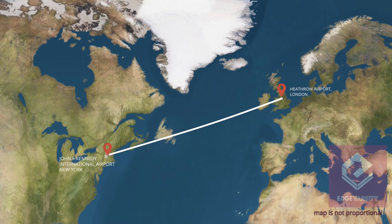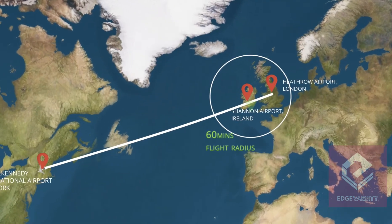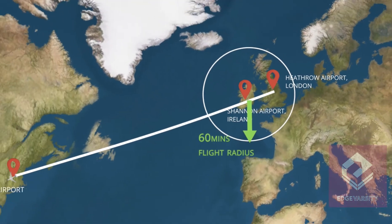Now let us see whether it is possible. Since the aircraft is flying under the 60 minutes rule, let's draw a circle with 60 minutes flying distance as radius and Shannon Airport Ireland as the centre. Shannon Airport is the last airport accessible to the flight on the direct line path from LHR London to JFK New York, making the circle around Shannon important to the 60 minutes rule.